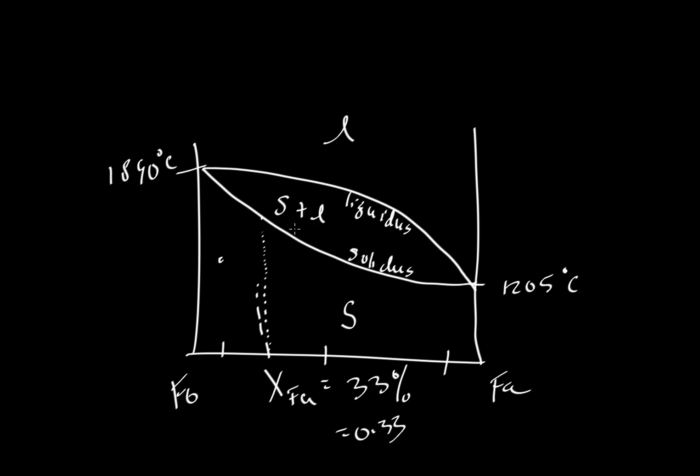Anything above the liquidus would be liquid. Anything that falls between the curves would be a mixture of solid plus liquid. Let's say we take this composition here. This composition here at that temperature would be completely solid.